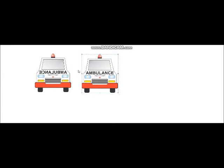A is there, so A will be displayed here. Then M is there, M will be displayed here. B is there, B will be displayed this side. Then U, so U will be displayed there. L, so L will be displayed in the mirror image. Then A, so A will be as it is. Then N — this is your N in a mirror image. C in the mirror image. And E in the mirror image. So this is ambulance written in a mirror image, and when we see it in a vehicle's mirror, we will see the right spelling.